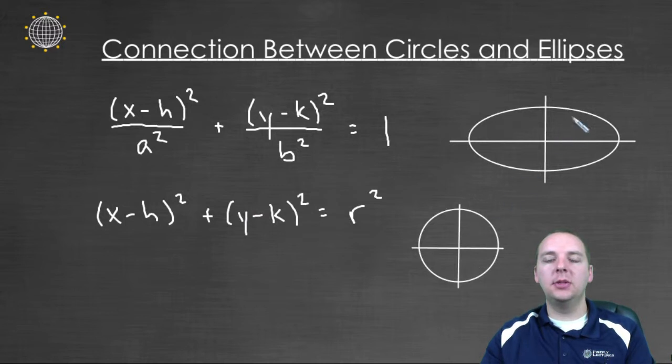And obviously there's some similarities in their graphs. Obviously a circle is not elongated in one direction or another, but there's just some connection we can't put our finger on. This video I just want to make a quick explanation of what that connection is.